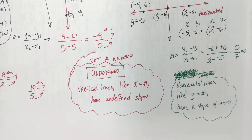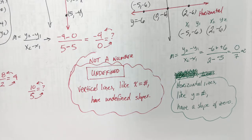Horizontal lines have a slope of zero, and it's confusing because it's new. That's why doing practice problems and homework is a big deal — it's very important. It's when you get unconfused.